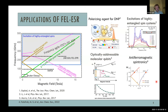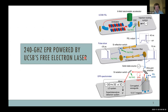Many of these applications are already approachable with the 240 GHz FEL EPR spectrometer. Let's take a closer look at how it works. It's a large spectrometer with three main parts: the FEL pulse slicer and the EPR spectrometer itself.